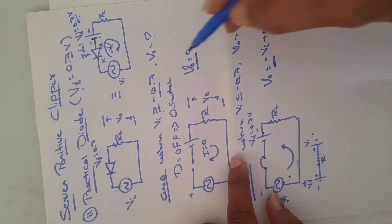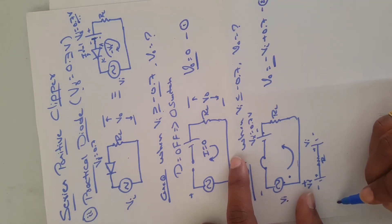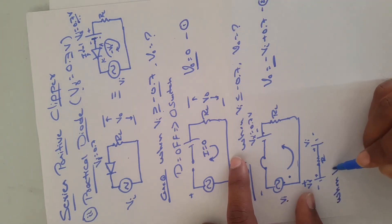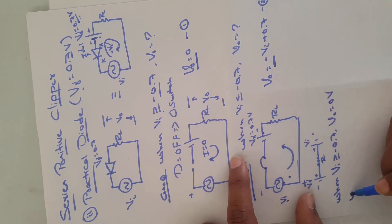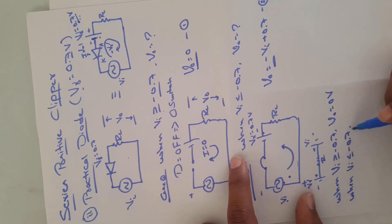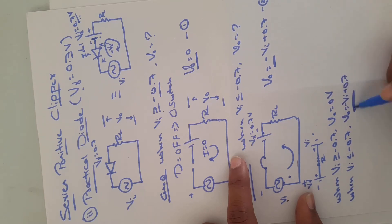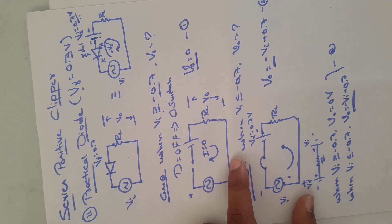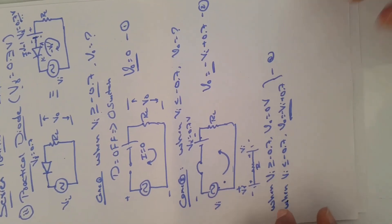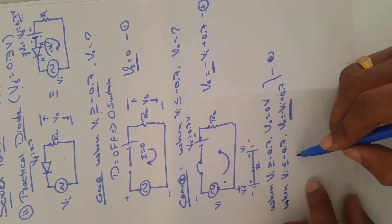Combining both expressions: when VI ≥ -0.7V, V-naught = 0 volts; and when VI ≤ -0.7V, V-naught = -VI + 0.7 volts. This is the complete mathematical representation of the series positive clipper with a practical diode. Now let's plot the output waveform.